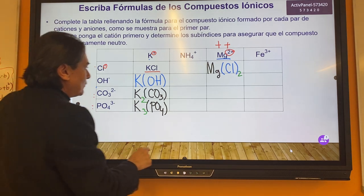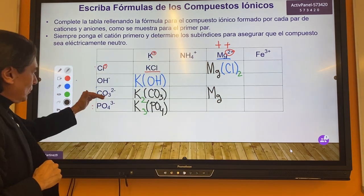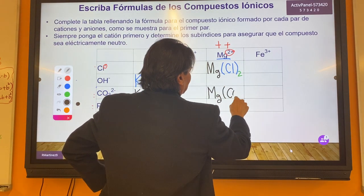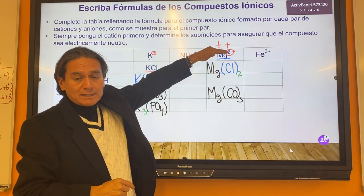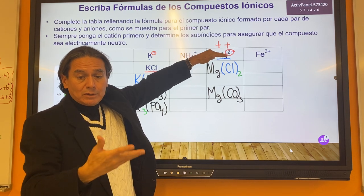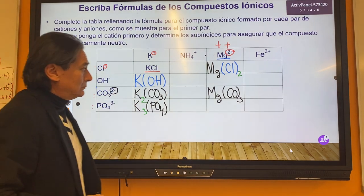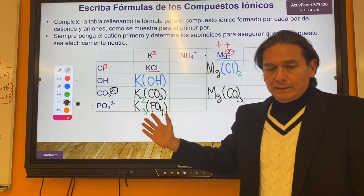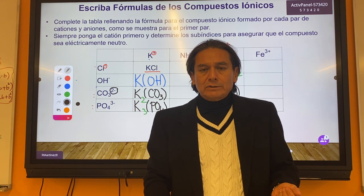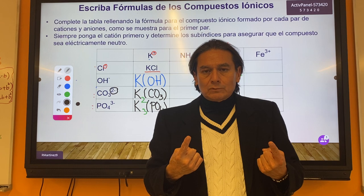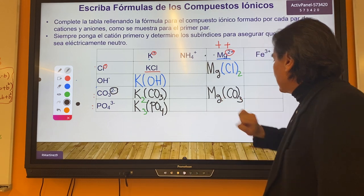Let's try forming magnesium with the carbonate. Notice that magnesium will donate two electrons to the reaction mixture and the carbonate also has a minus two. That means if you take one mole of carbonate with one mole of magnesium, it's going to form a one-to-one ratio to form the ionic compound MgCO₃.